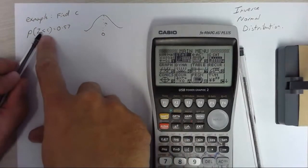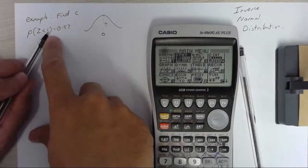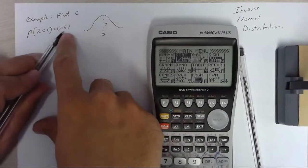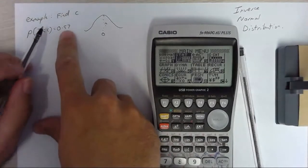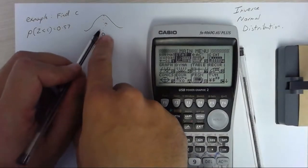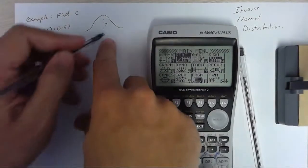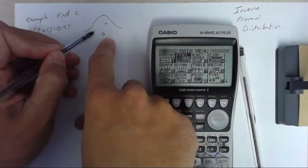Now it says z is less than c and it's equal to 0.57. So the probability is more than 50%. If it was 50%, exactly 50%, then it would just be like this half of it.